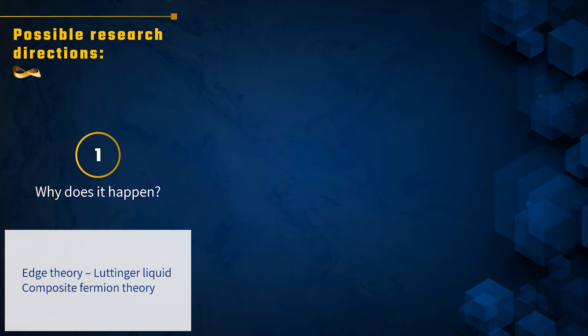And we are going to talk about this in the context of the theory of the edge, Luttinger liquid, and also the theory of the bulk when we talk about composite fermion theory. That's one direction. A second direction you can imagine thinking about is, let's forget the question of why does the effect happen. It happens.